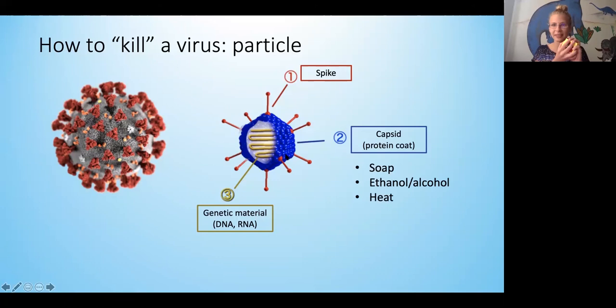So that's one way to destroy a virus. Another way to destroy a virus when it's outside of a cell is to damage its genetic material or its RNA or DNA, the inside. And we can do this with UV light. As we know, UV light damages our cells - it can also damage the DNA or RNA of a virus. So that's how you kill a virus particle.